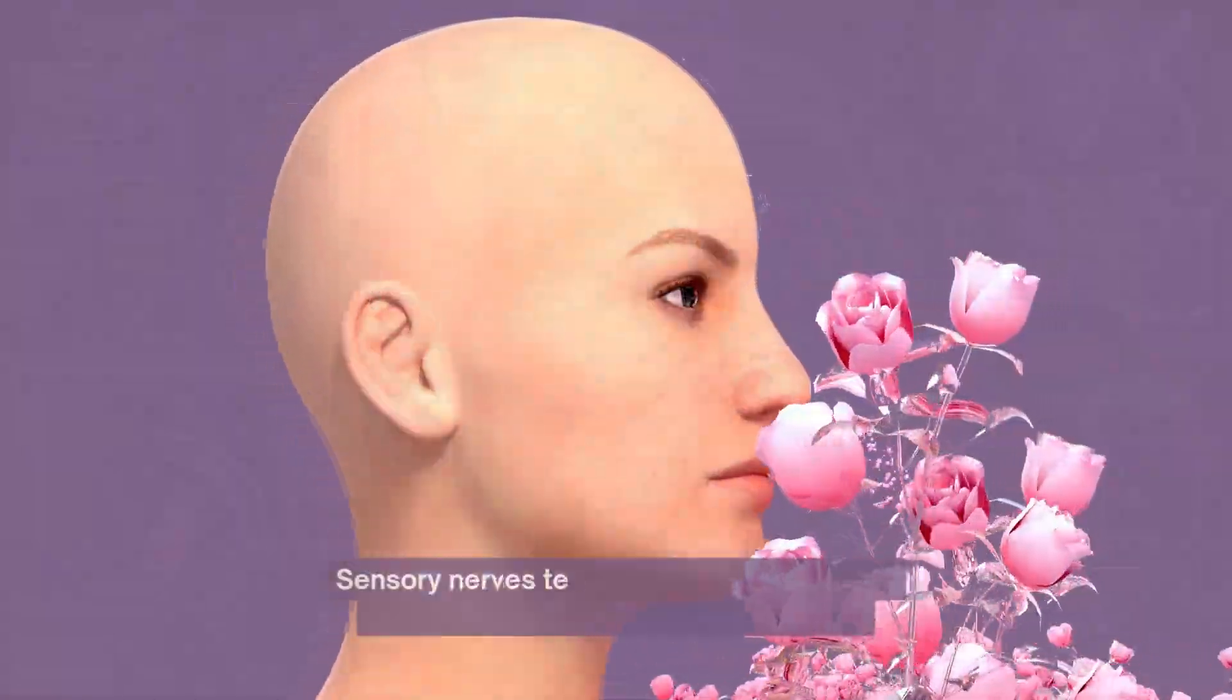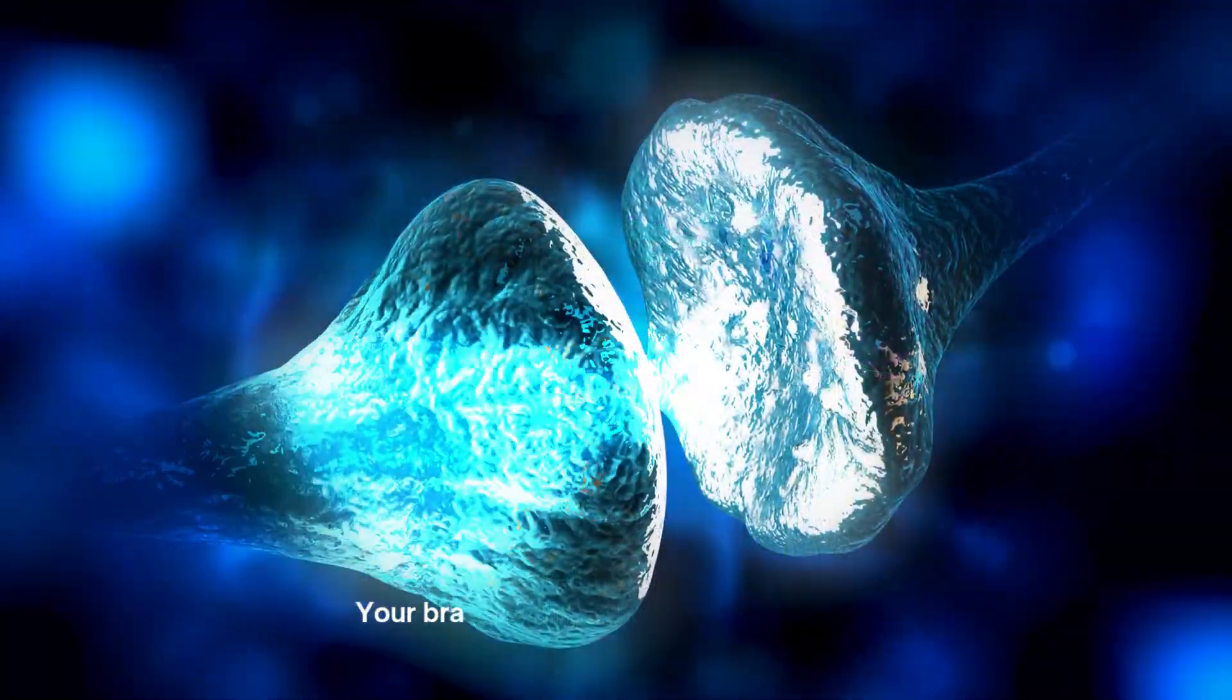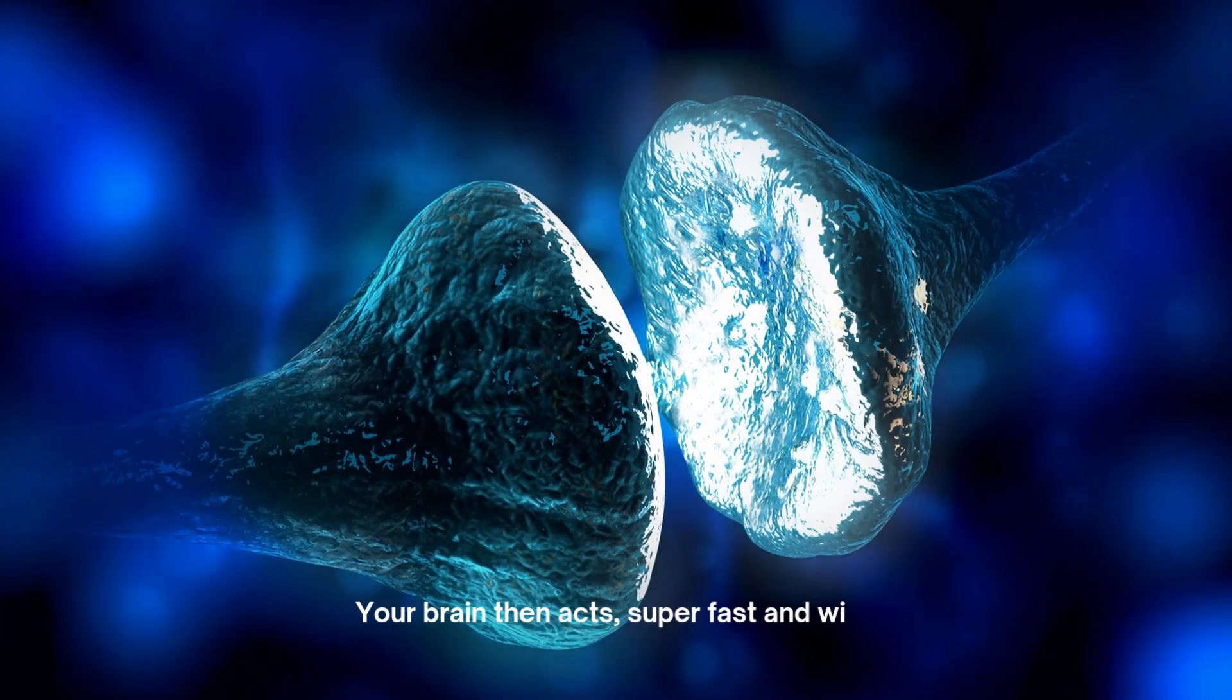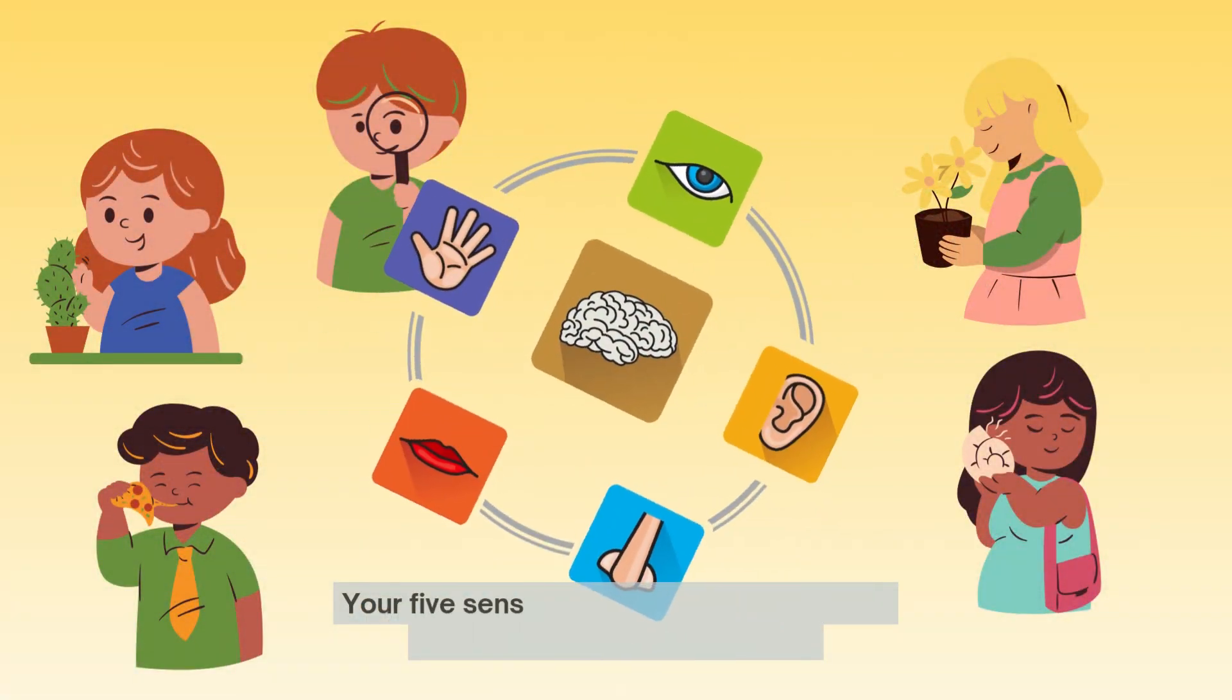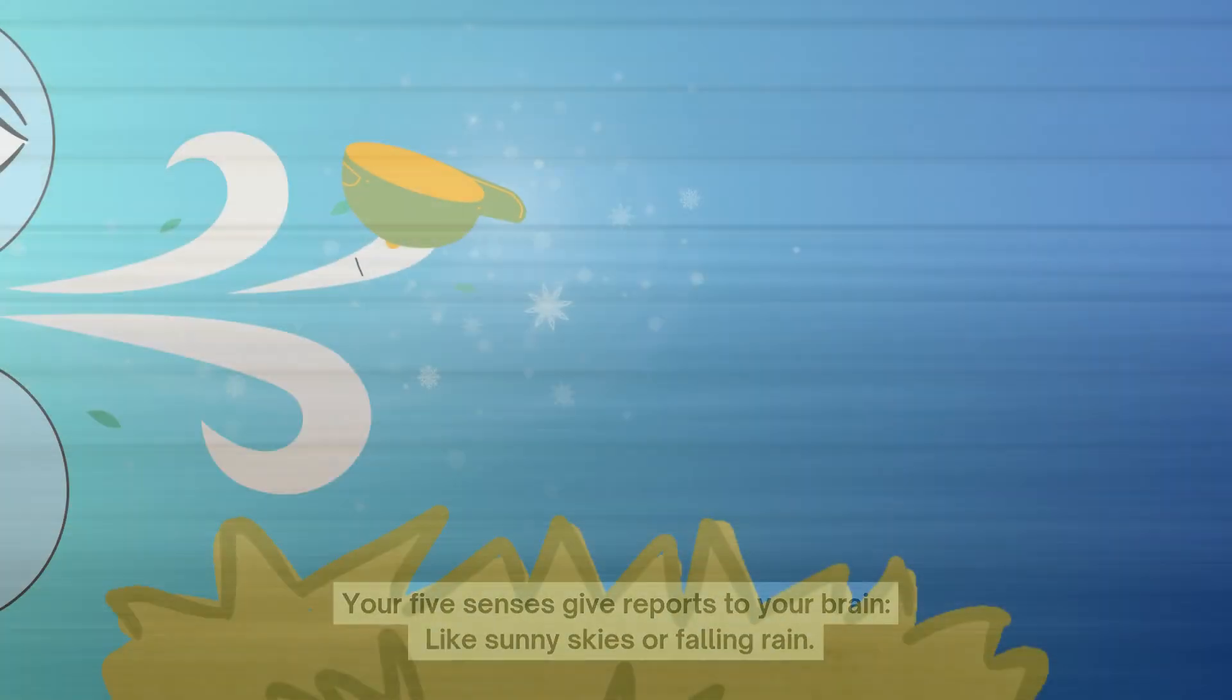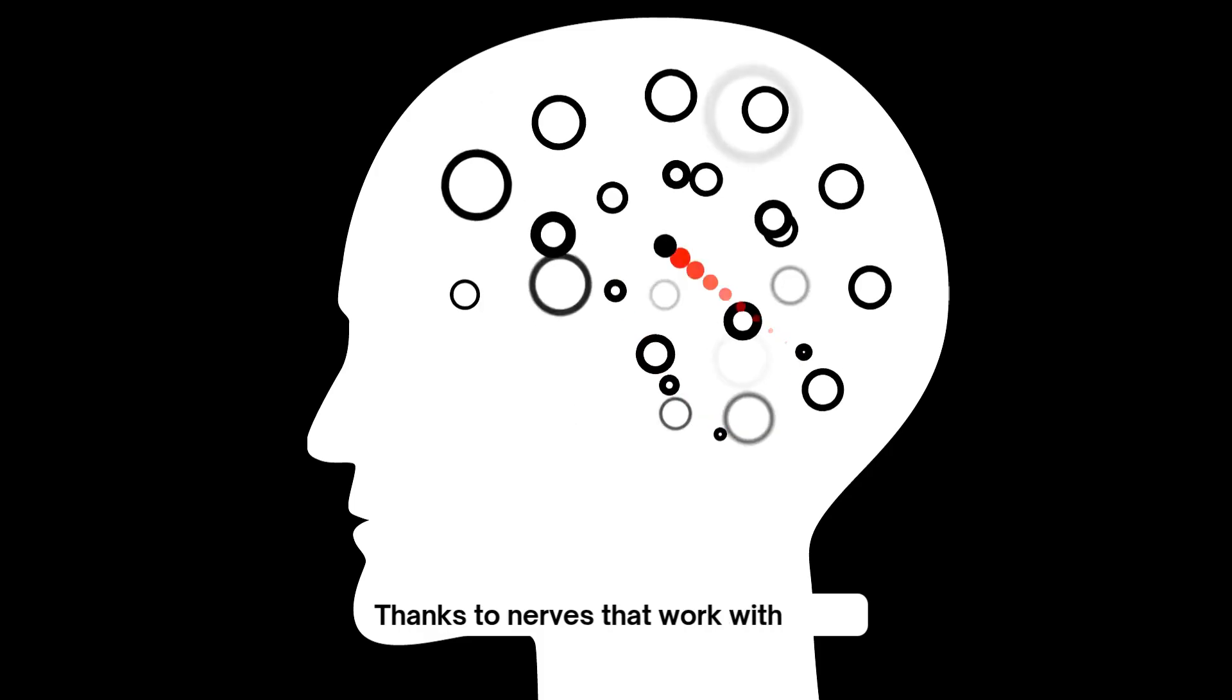Sensory nerves tell the brain what they find. A smell, a sight, or how you're aligned. Your brain then acts super fast and wise, with motor nerves sending replies. Your five senses give reports to your brain, like sunny skies or falling rain. You see, hear, taste, and feel the breeze, thanks to nerves that work with ease.